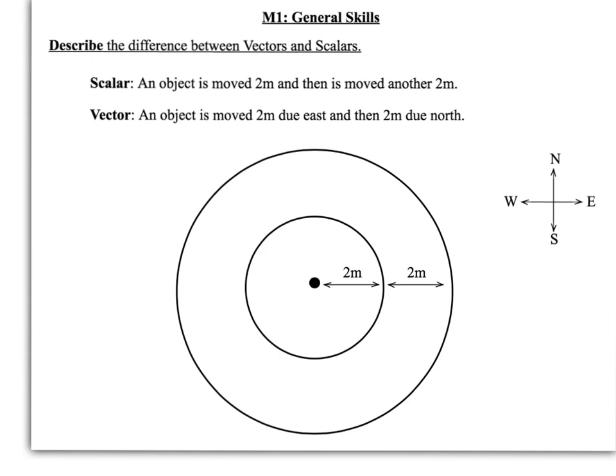The first thing you need to know is how to describe the difference between a vector and a scalar. To give you an example of what I mean by this, you'll have come across distance before. Now, distance is a scalar, and it's a scalar because it gives you no indication of the direction in which the distance is.